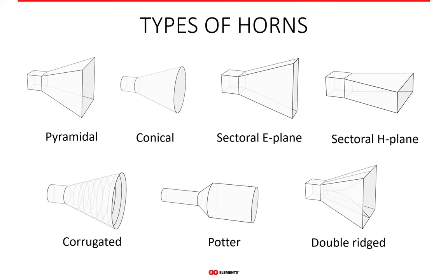Here are a few examples of various shapes of horns. Some are rectangular, some are flat on the horizontal or vertical side, and some have strange structures inside. Each variation has its advantages and optimal usage scenarios — some are wide-band, some are easier to manufacture, some have minimum side lobes. For example, the double-ridged horn in the lower right corner has two fins inside in a vertical direction, making the horn extremely wide-band. That's why this type of horn is used in antenna measurements — because it covers a vast span of frequencies.